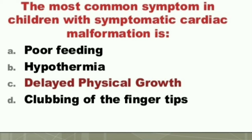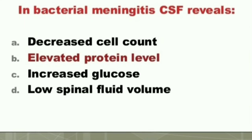Question: The most common symptom in children with symptomatic cardiac malformation is: A) Poor feeding, B) Hypothermia, C) Delayed physical growth, D) Clubbing of the fingertips. The answer is C) Delayed physical growth. The most common symptom in children with symptomatic cardiac malformation is delayed physical growth.